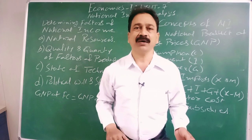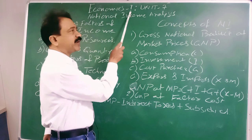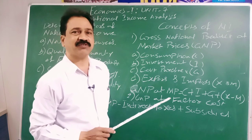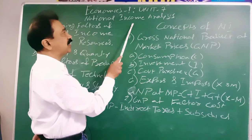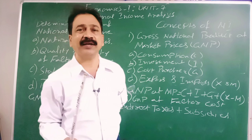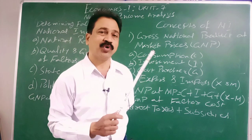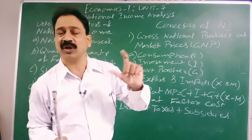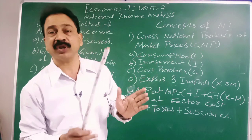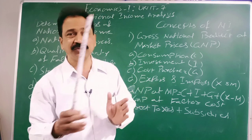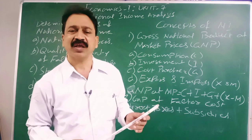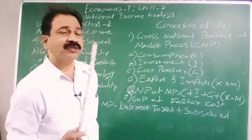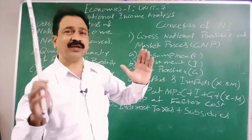Good morning students, welcome back to first year economics. Today we are starting Unit 7 — we completed Unit 6, theories of distribution, yesterday. Today we are continuing with national income analysis. We are purely entering into macroeconomics. Till now we were discussing microeconomics — till the fifth chapter it was all about individual prices, individual demand, individual industry, firm, or person.